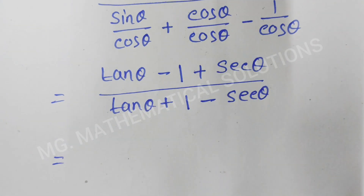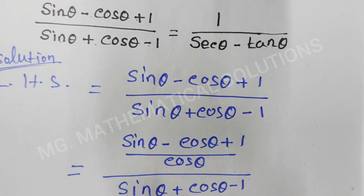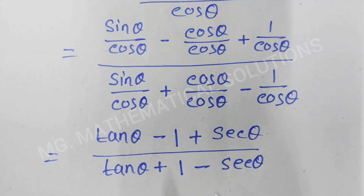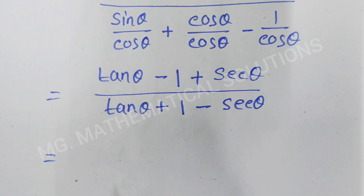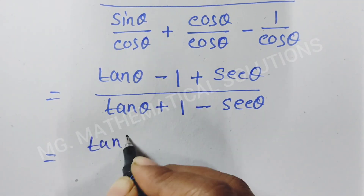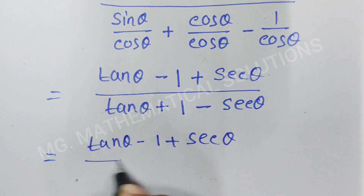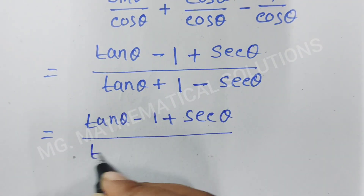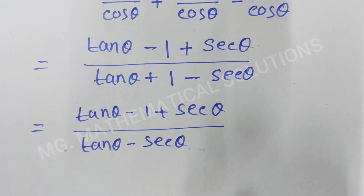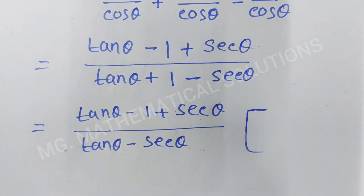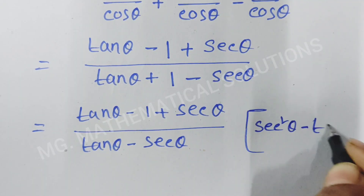Now we try to convert this expression to match the right hand side. We try to cancel terms. So in the numerator we have tan θ minus 1 plus sec θ. We write 1 using the identity: sec²θ minus tan²θ equals 1.